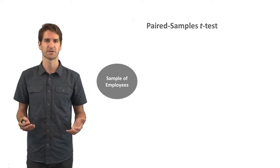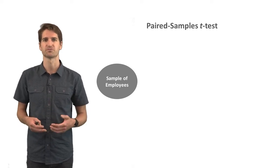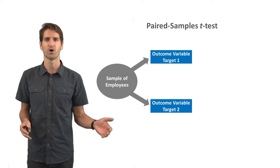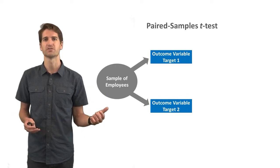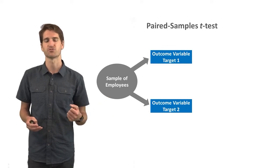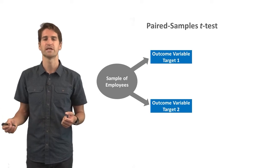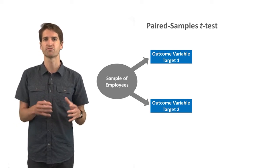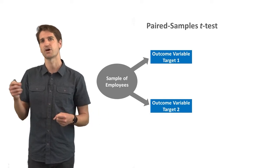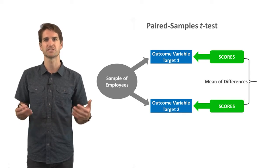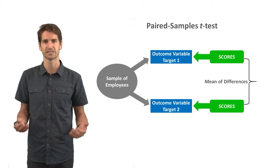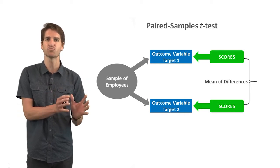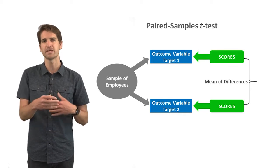In another scenario where a paired samples t-test would be appropriate, imagine the same group of employees rates two different targets — target one might be their satisfaction with their supervisor, and target two might be their satisfaction with their co-worker. It's the same group of employees making both ratings, so we can look at the mean of the differences and determine whether the mean difference between these two scores is statistically significant.